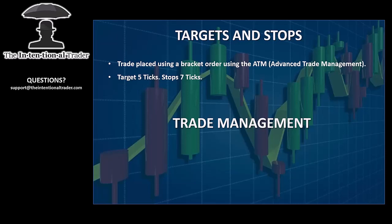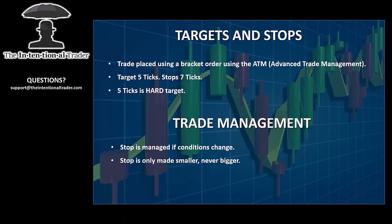I only trade for a hard target because we're expecting that what we've identified is only a pullback from the current trend — we expect the trend to continue. Whether it does or not we don't know. If the conditions that got me into the trade change such that I shouldn't be in it anymore, I'll get out by managing my stop — making it shorter, not just hitting the exit button, since price can still move in your favor. I never ever increase my stop.